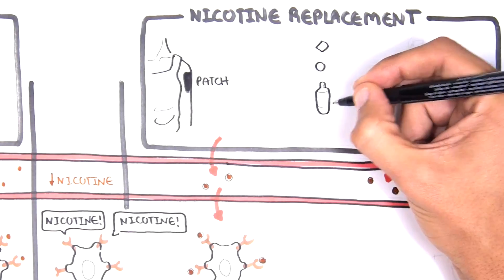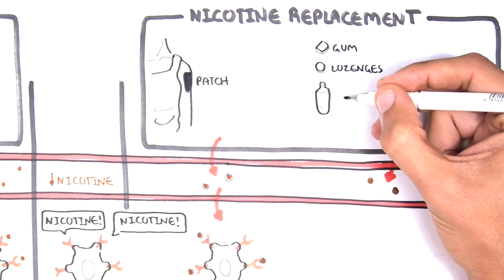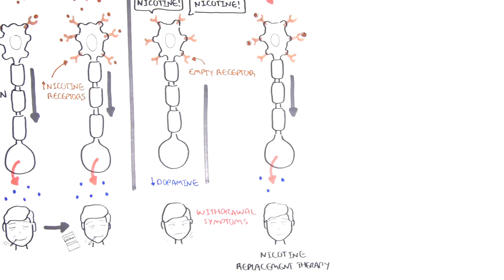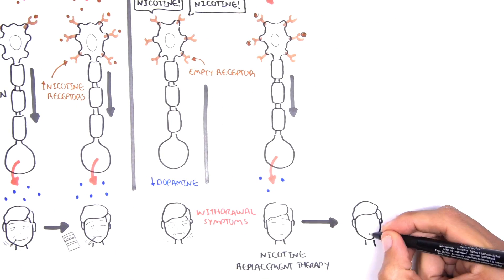Short-acting NRT products include gum, lozenge, nasal spray, and inhaler. These get nicotine to the brain pretty fast, but the nicotine doesn't stay for very long. They can be helpful when you suddenly get a stronger craving.